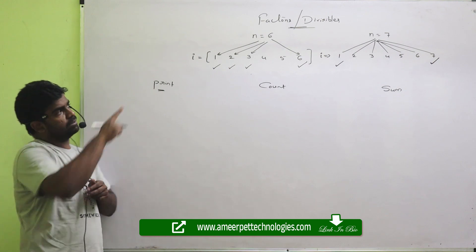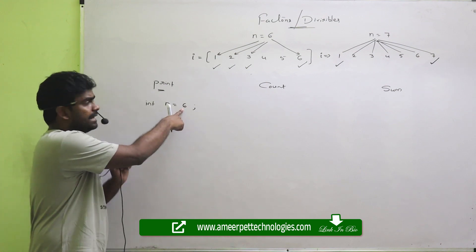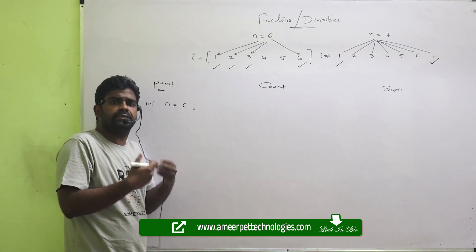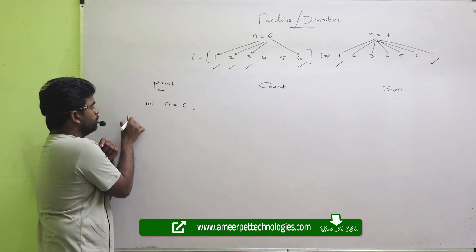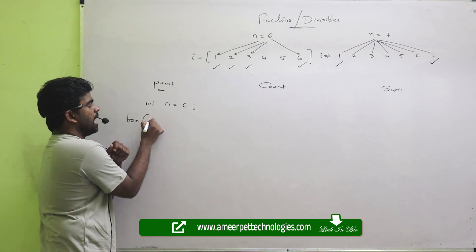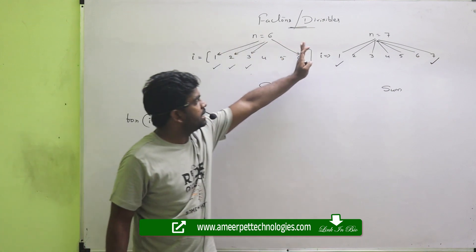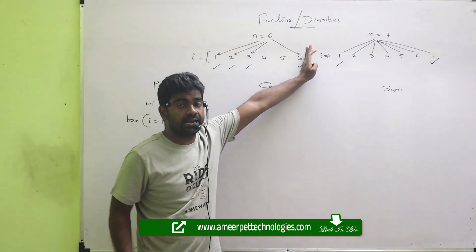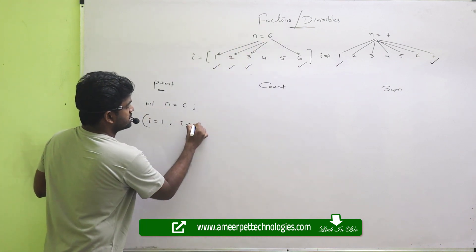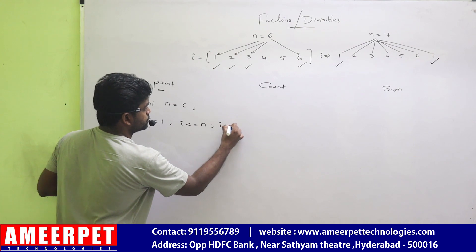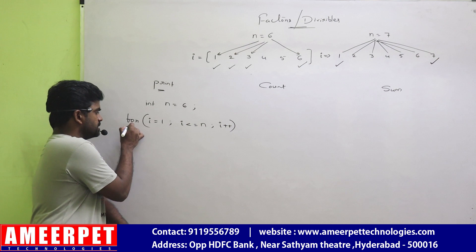I am taking the number N — any number you can take. Just I am taking 6; you can take 7, 10, 12 — anything, you can change it. Now, I am repeating the loop for I value starting with 1, ending with N. So the condition is: I less than or equal to N, I plus plus.